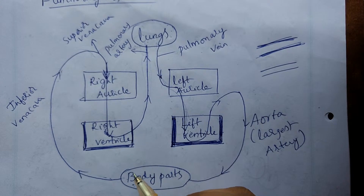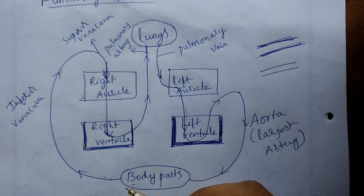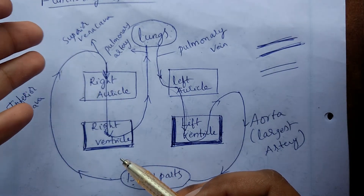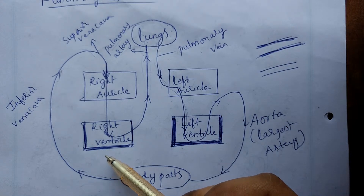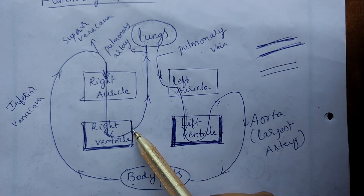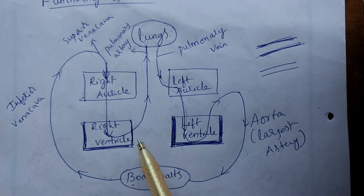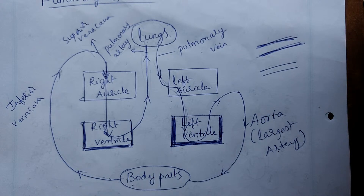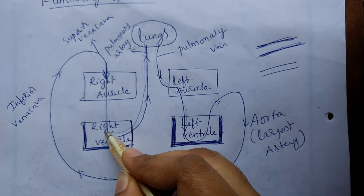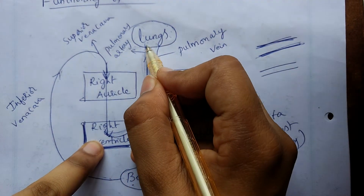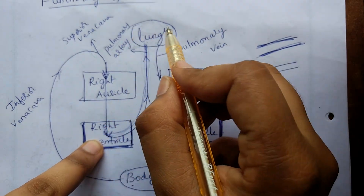The left ventricle wall is thick because it needs to pump blood to all body parts. Arteries are thick-walled. The pulmonary artery connects the lungs. The word 'pulmonary' is related to the lungs.